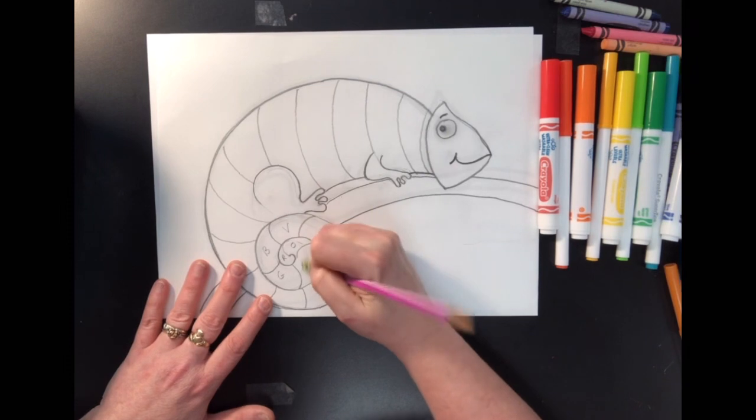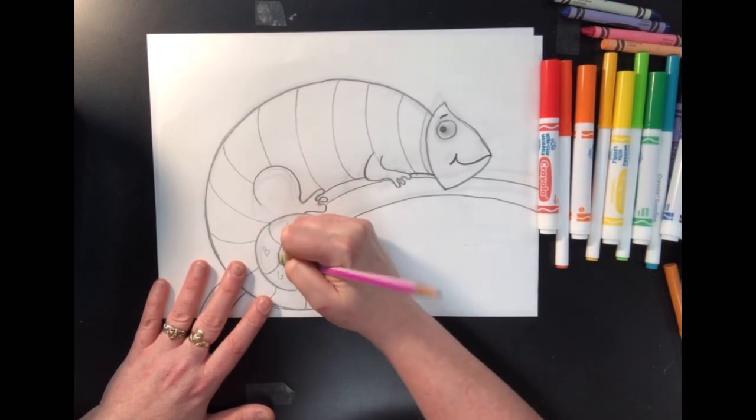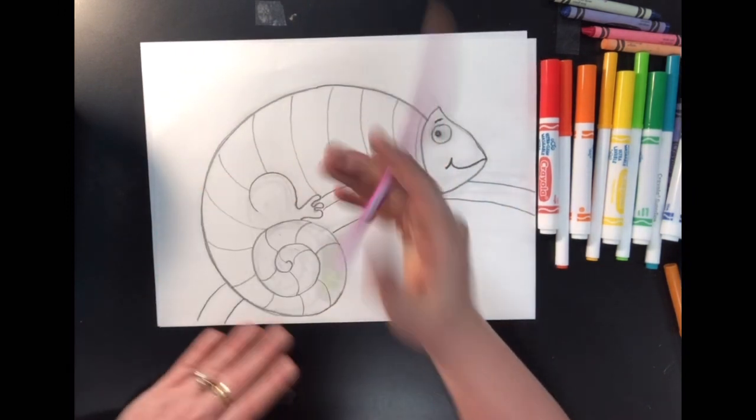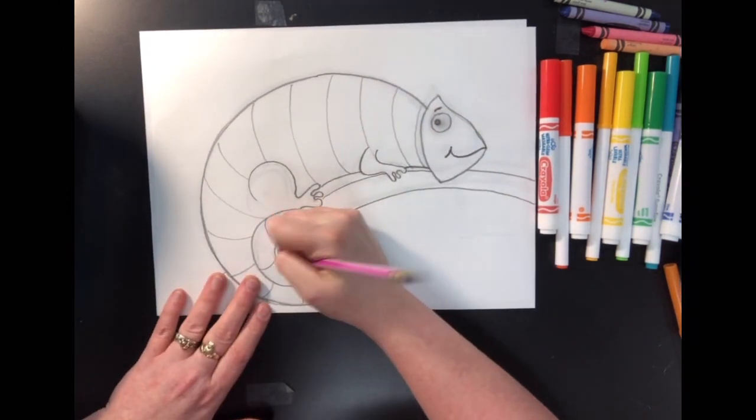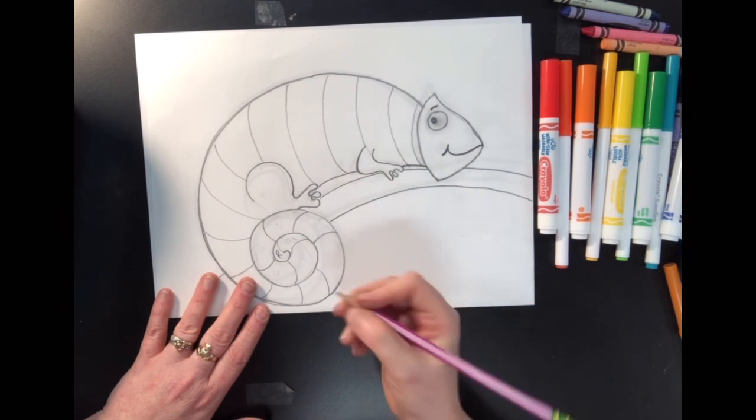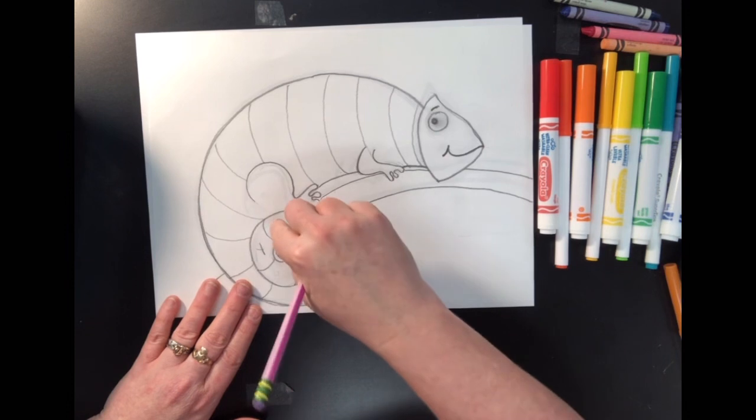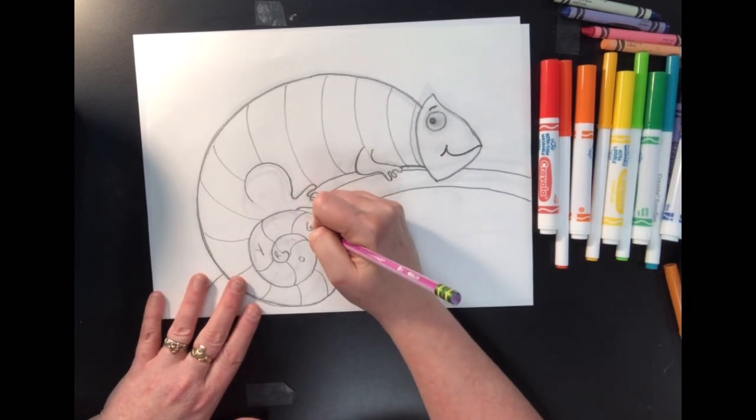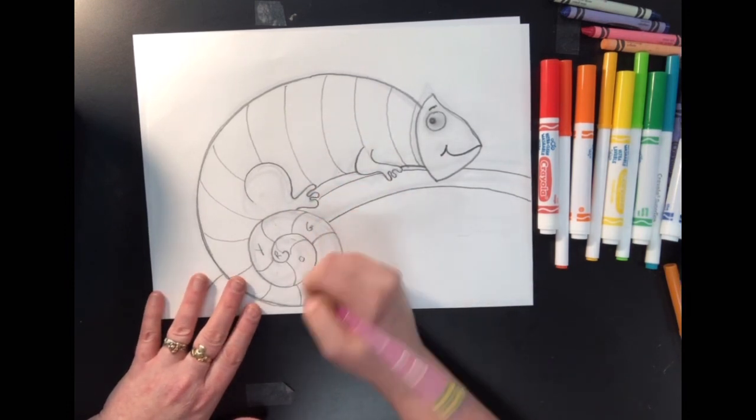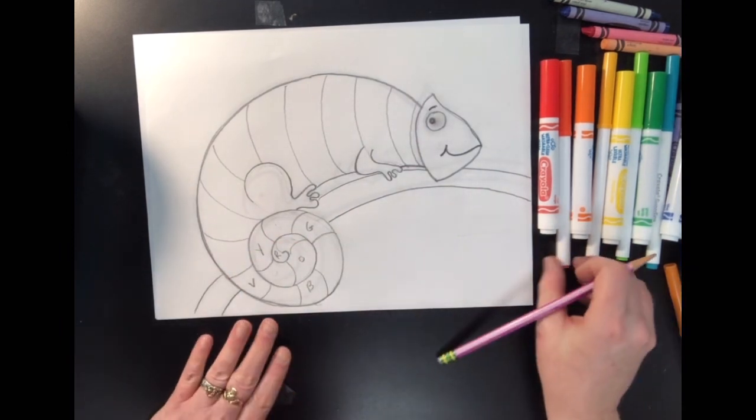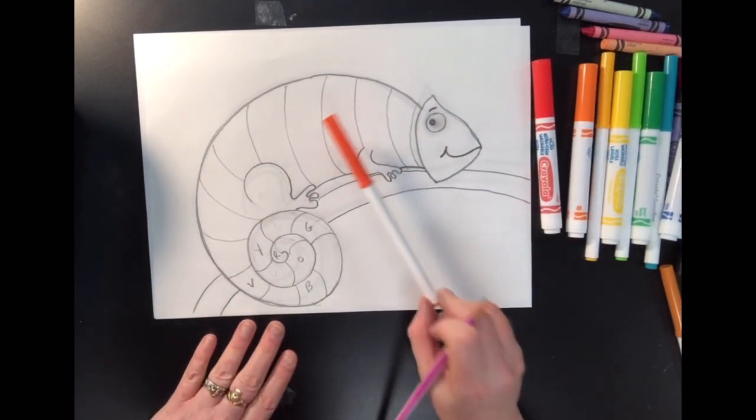Now, if I was going to do the tertiary colors to really give myself a challenge, I would start off with red and then I would skip a space and write orange and skip a space and write yellow, skip a space and write green, skip a space, write blue, skip a space, write violet. Now, why did I skip a space? Because I need to put in the names of the tertiary colors.